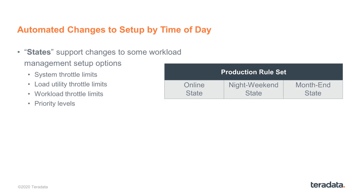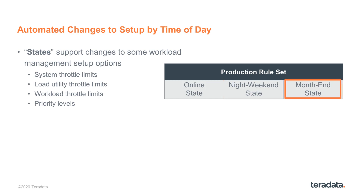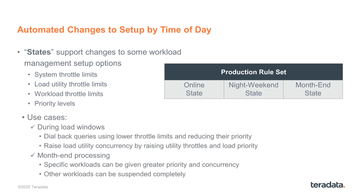Another helpful feature in workload management is the ability to automate the change of priorities or throttle limits by time of day. You set this up in Teradata Integrated Workload Management by defining different planned environments. In this example, there's an online state which might be from eight to five, belonging to one planned environment, and then there's a night or weekend state. A state is a bundling of the resource, priority scheduler, and workload management options. There's also a third planned environment for month-end processing, where you might want to give high priority to one or two workloads to get work through the system. This can be very helpful for managing load windows or particular times when the business needs a shift in priorities and a change in throttle limits.